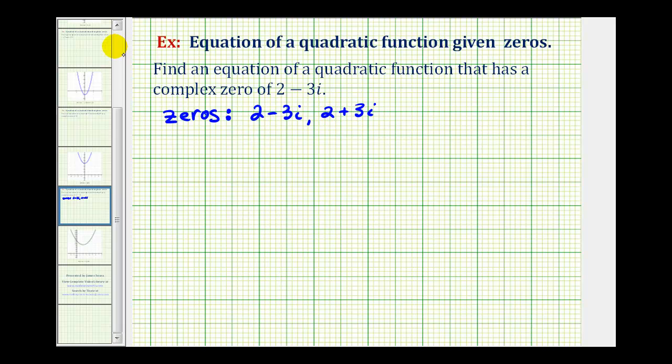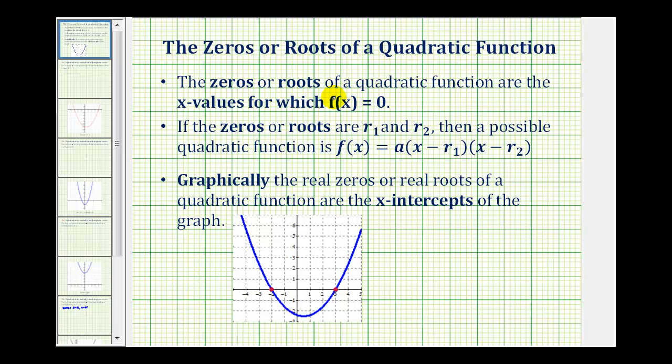For a quick review, the zeros or roots of a quadratic function are the x values for which the function f(x) is equal to zero. If our zeros are r₁ and r₂, then a possible quadratic function is f(x) = a(x - r₁)(x - r₂). Notice how in these factors, we're subtracting the zeros or roots of the quadratic function.